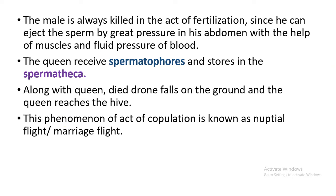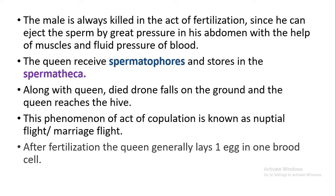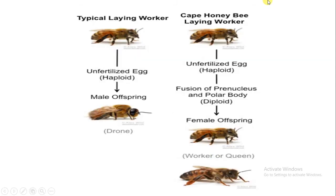This phenomenon is called the act of copulation, also known as the nuptial flight or marriage flight. After fertilization, the queen produces about two thousand to three thousand eggs per day, with one egg laid in one brood cell. There are two types of eggs produced by the queen: unfertilized eggs and fertilized eggs.